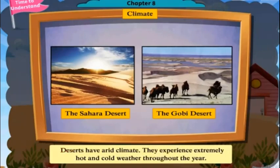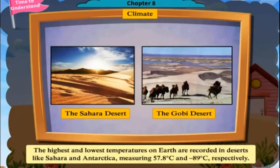Deserts have an arid climate. They experience extremely hot and cold weather throughout the year. The highest and lowest temperatures on earth are recorded in deserts like Sahara and Antarctica, measuring 57.8 degrees Celsius and minus 89 degrees Celsius respectively.